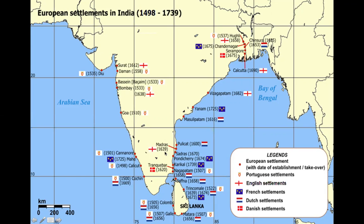Bombay and Calcutta would both become important outposts, as well as Chennai — Madras — mentioned earlier in 1639. The East India Company was one of the largest employers in Britain. It would eventually hire vast numbers of overseas employees called sepoys, who not only became part of the bureaucracy on behalf of the East India Company, but were also trained as part of the military. In the 18th century, eventually well over a quarter million of these sepoys would serve as military functionaries.